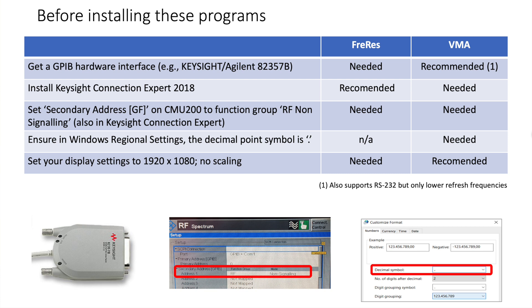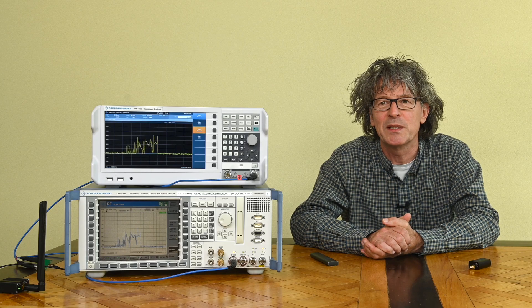Once you set the decimal to a period and restart your computer, suddenly everything works as it should. Finally, I found it best to set your computer to a modest screen resolution of 1920×1080 and disable any screen scaling. These programs have fixed-size windows that aren't resizable — on a 4K monitor they get extremely small, and with some scaling settings the display goes wrong. Just use simple display settings and you should be fine.